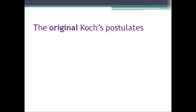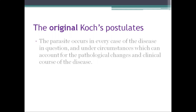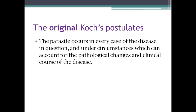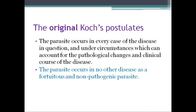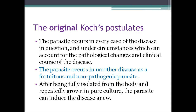Originally, Robert Koch gave three conditions. First, the parasite occurs in every case of the disease in question, under circumstances which can account for the pathological changes and clinical course of the disease. Second, the parasite occurs in no other disease as a fortuitous and non-pathogenic parasite. Third, after being fully isolated from the body and repeatedly grown in pure culture, the parasite can induce the disease anew.